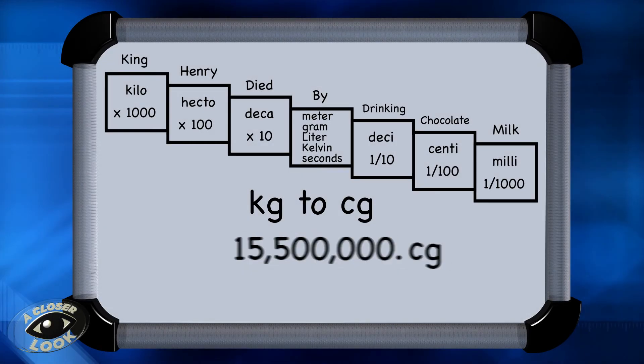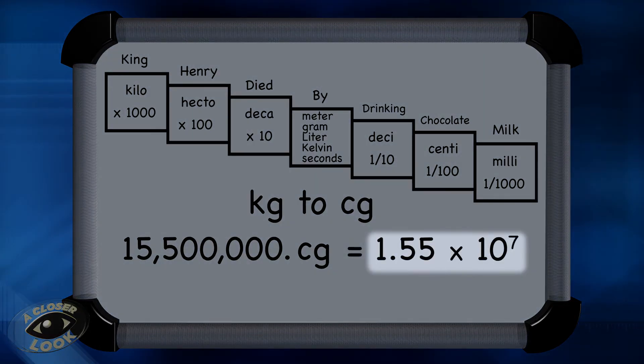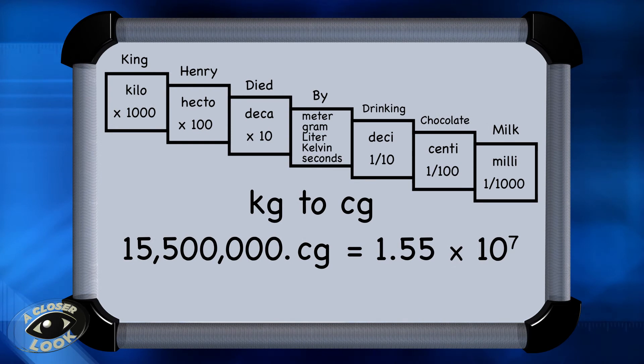And what we find is that we have 15,500,000 centigrams. Or in scientific notation, you would write that as 1.55 times 10 to the seventh centigrams, written as cg.